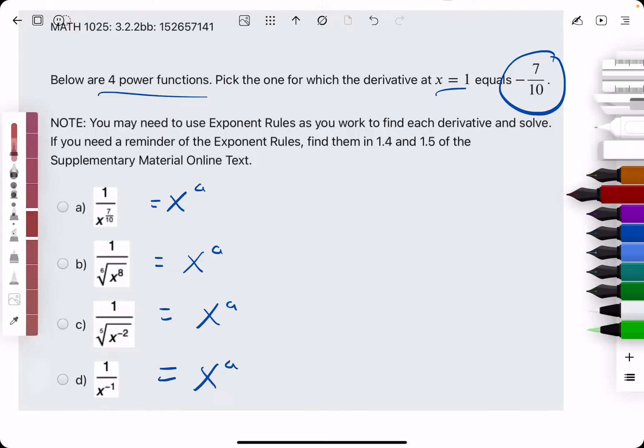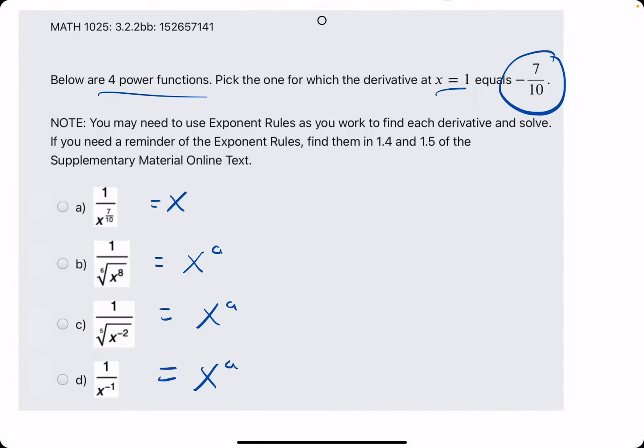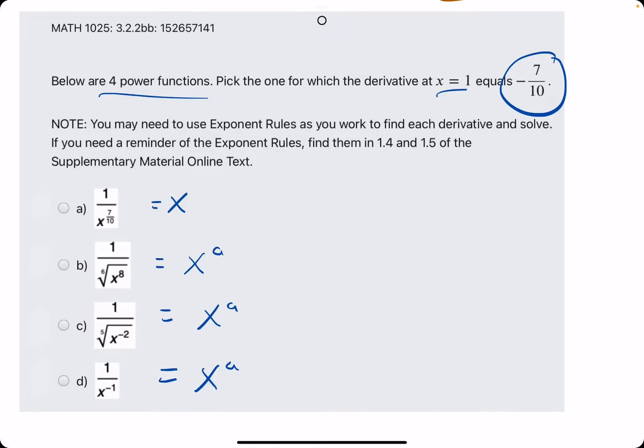Starting with the first one, if we had to rewrite 1 over x to the 7 tenths as x raised to some power, bringing that x term from the denominator out of the denominator would give us x to the negative 7 over 10. So that's the purpose of negative exponents. If it's positive 7 tenths in the denominator, once it's out of the denominator, it becomes negative. So we have x to the negative 7 tenths. Let's go ahead and rewrite these other ones, even though we might see our answer already.